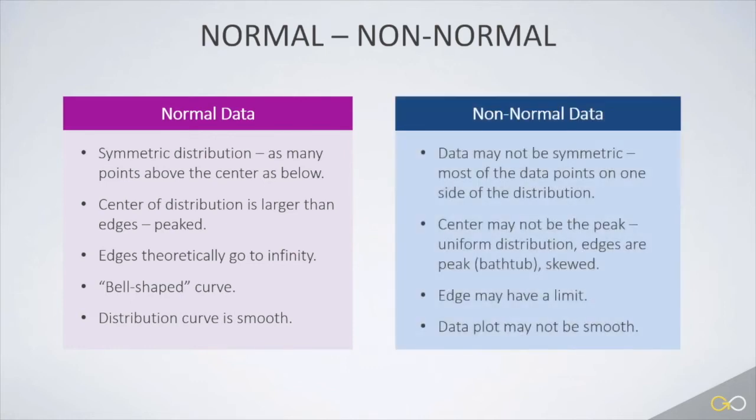Non-normal data can be characterized by one or more of these effects. First, it may not be symmetric. The data is skewed to one side or the other. Second, it may not have a peak center due to central tendency. It could be uniform where the data is level across the distribution, or even a bathtub shape, where the edges are high, but the center is low.